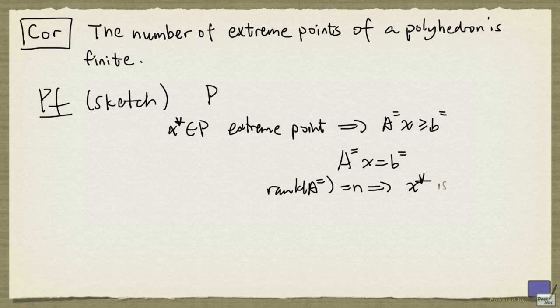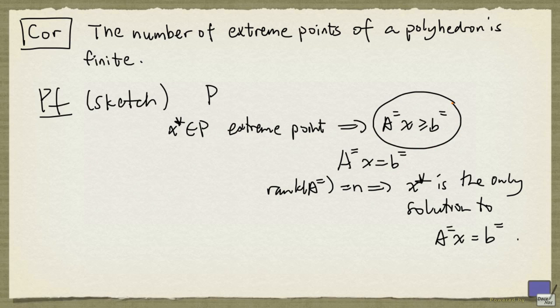that means x* is the only solution to the system A^= x = b^=. Since there are only finitely many subsystems of Ax ≥ b that you can choose from, therefore the number of extreme points cannot be more than the number of these kinds of subsystems. And so the number of extreme points is finite.